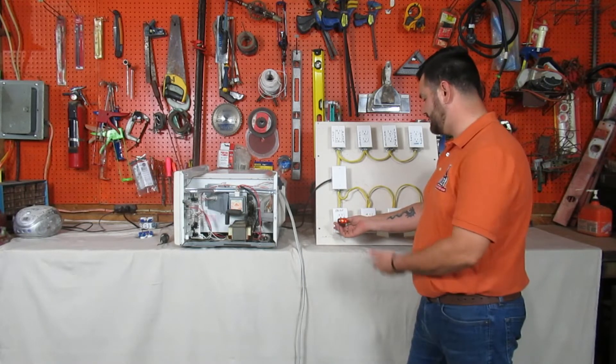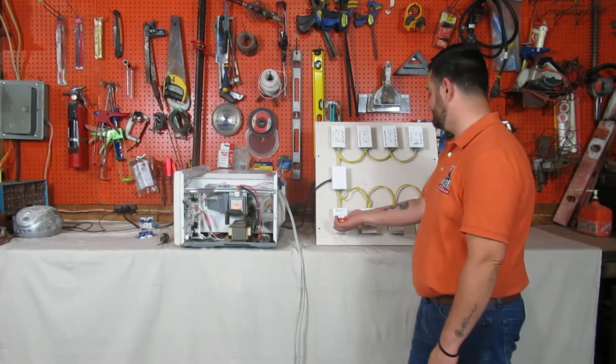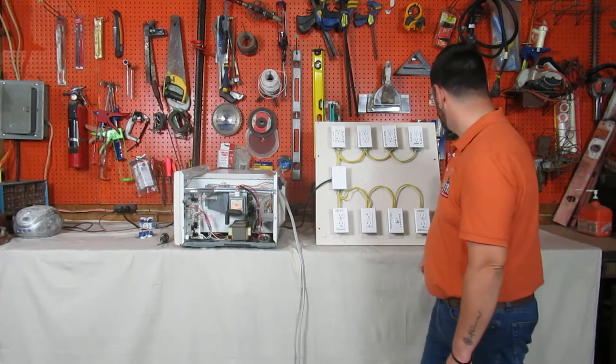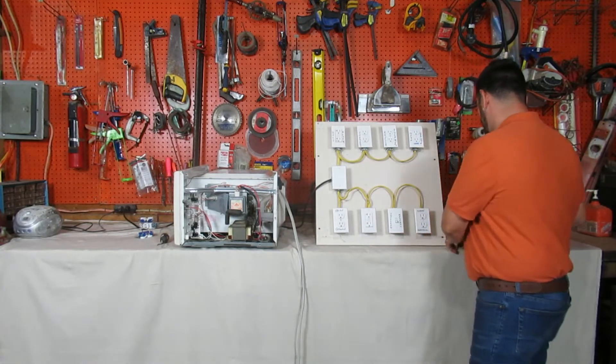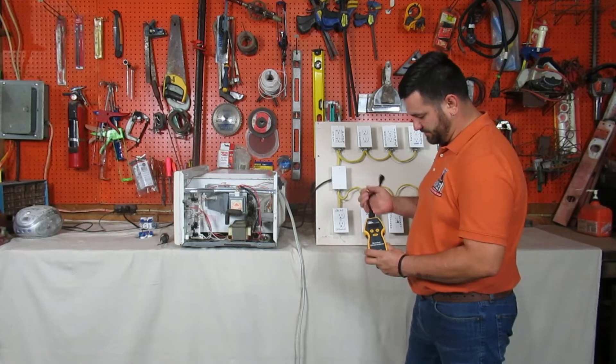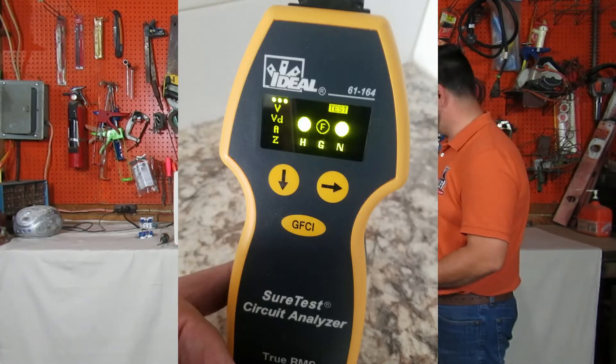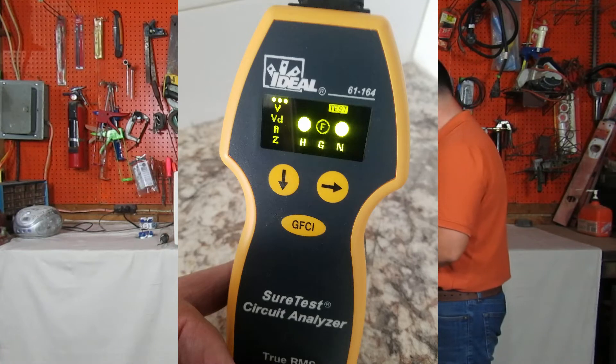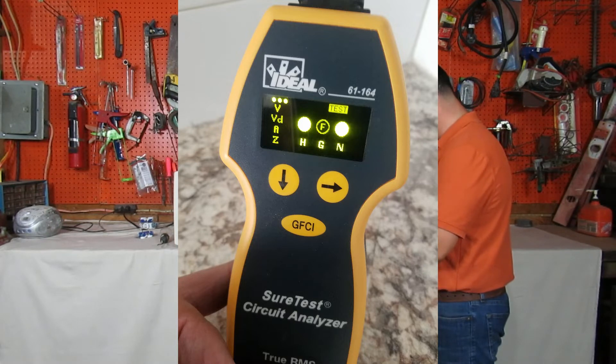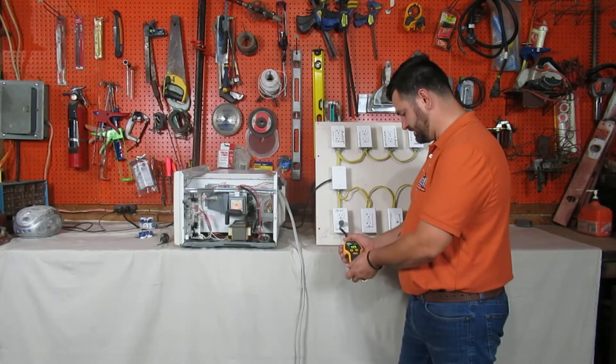But if you were to plug in this sure test, this $400 device that we use, a lot of home inspectors don't use this, you can get an accurate reading on whether the outlet is truly grounded or not. There it shows we have a false ground on this one.